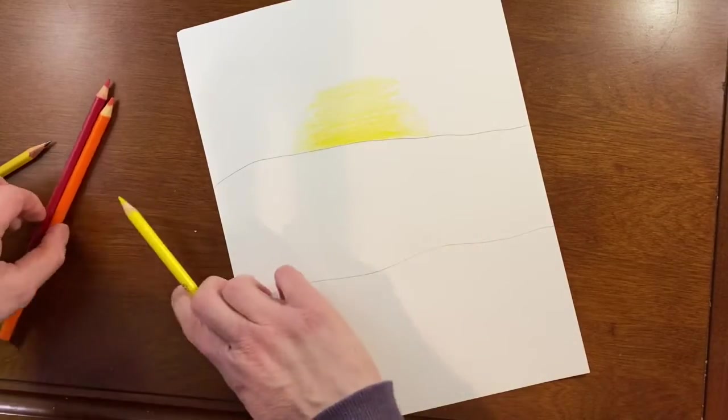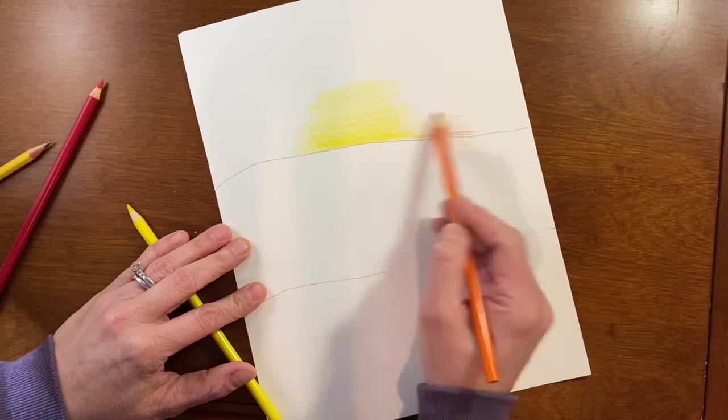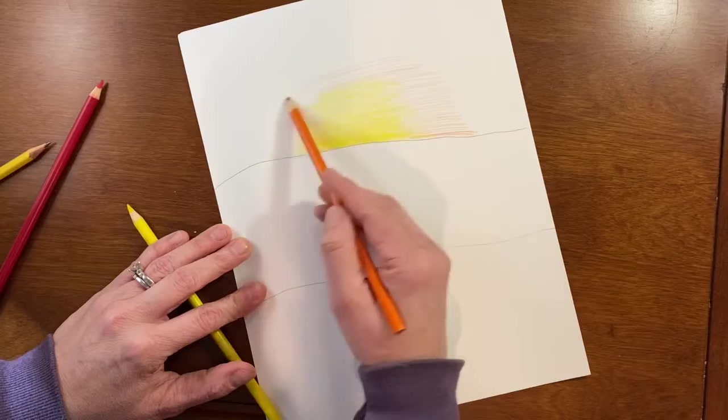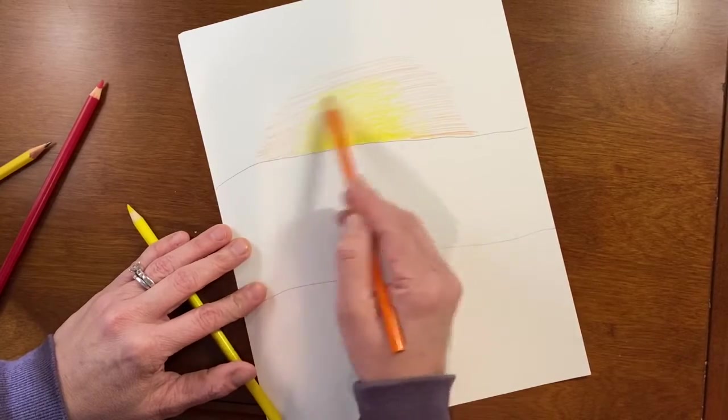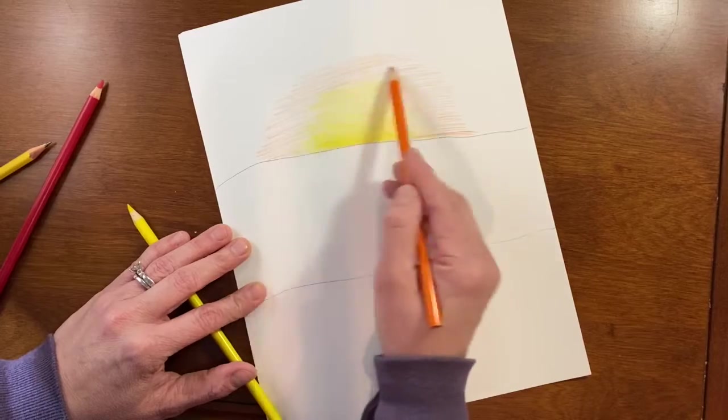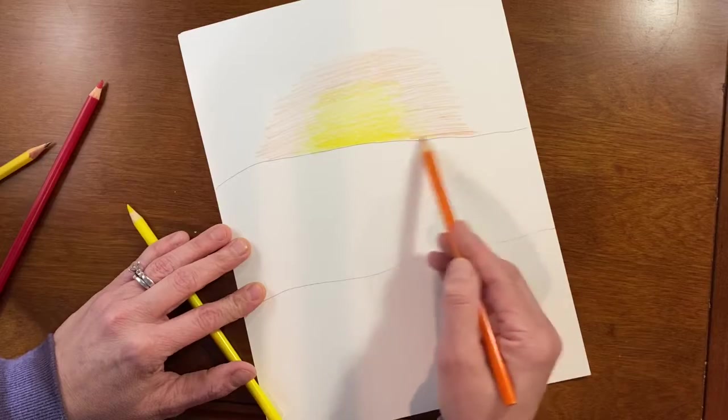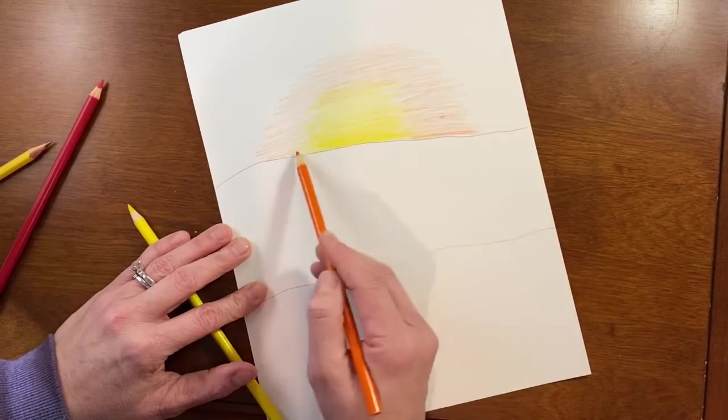And then when I'm ready, I'm gonna lightly go ahead and overlap that yellow with the orange. That's gonna kind of go around the yellow shape, so I'm going light because, again, like we do with color in general, you can always add more but it's hard to take it off depending on what material we're using.